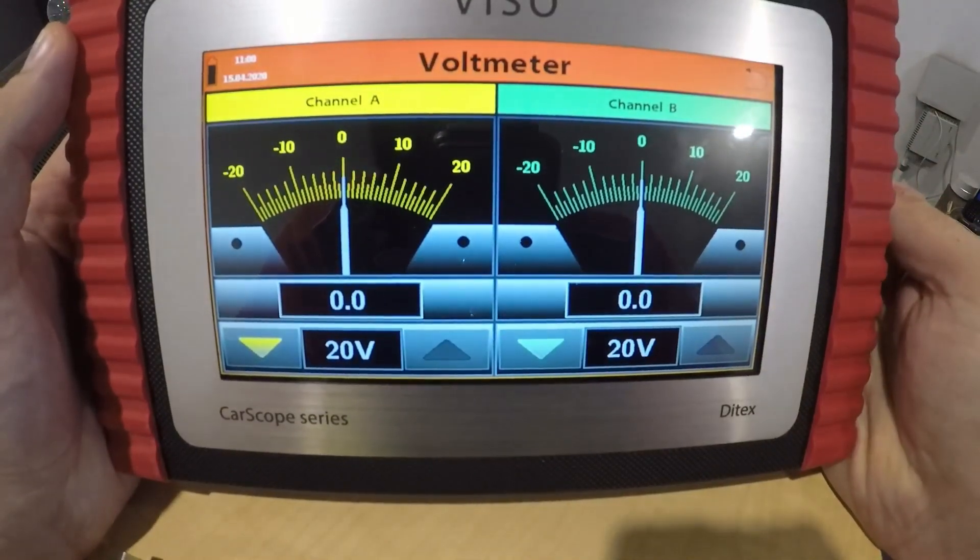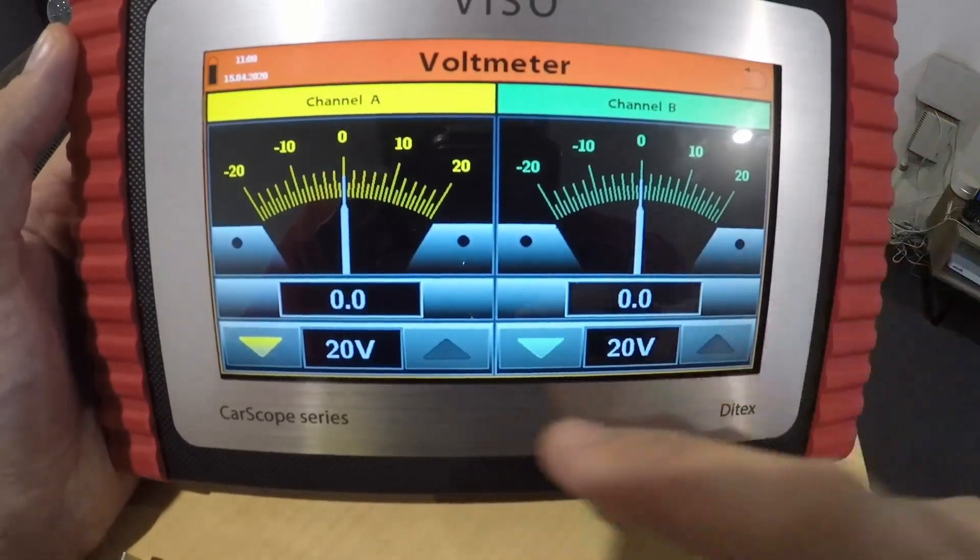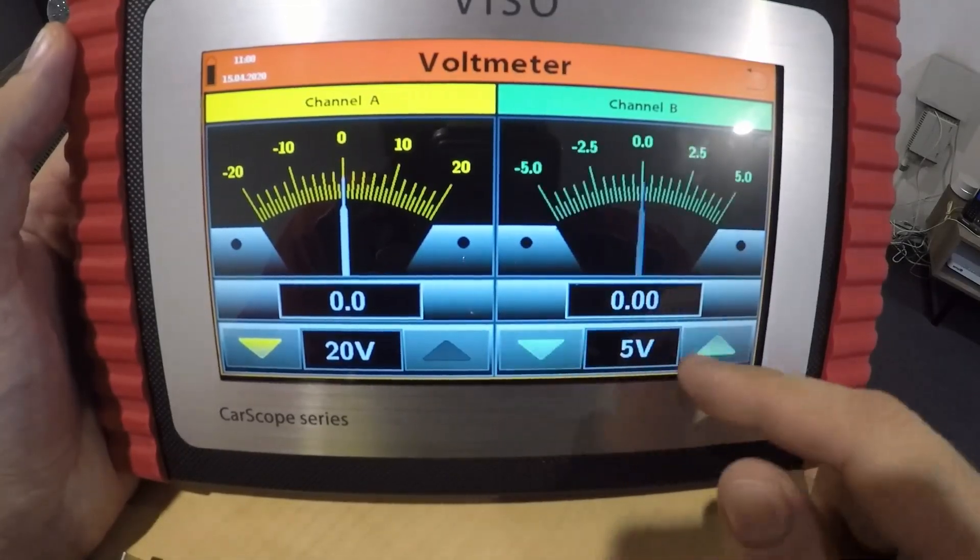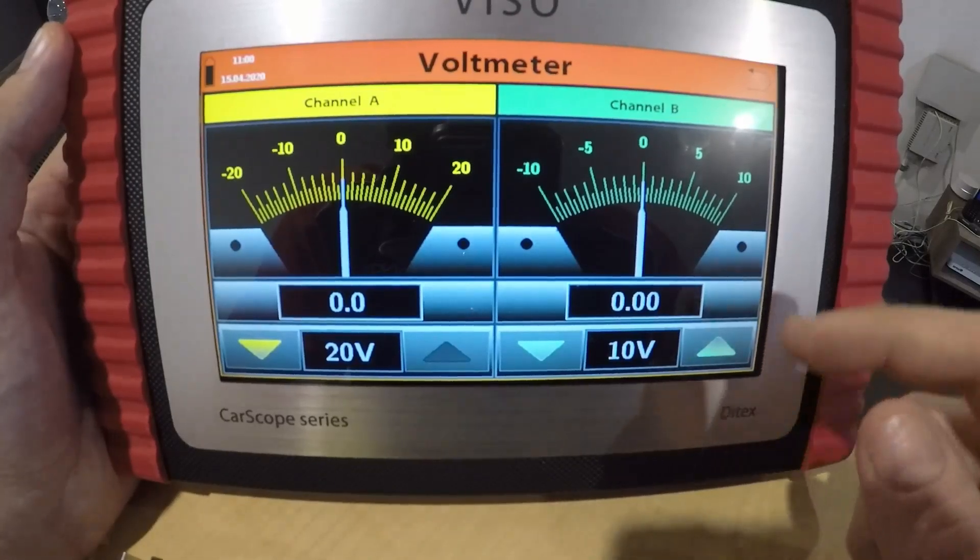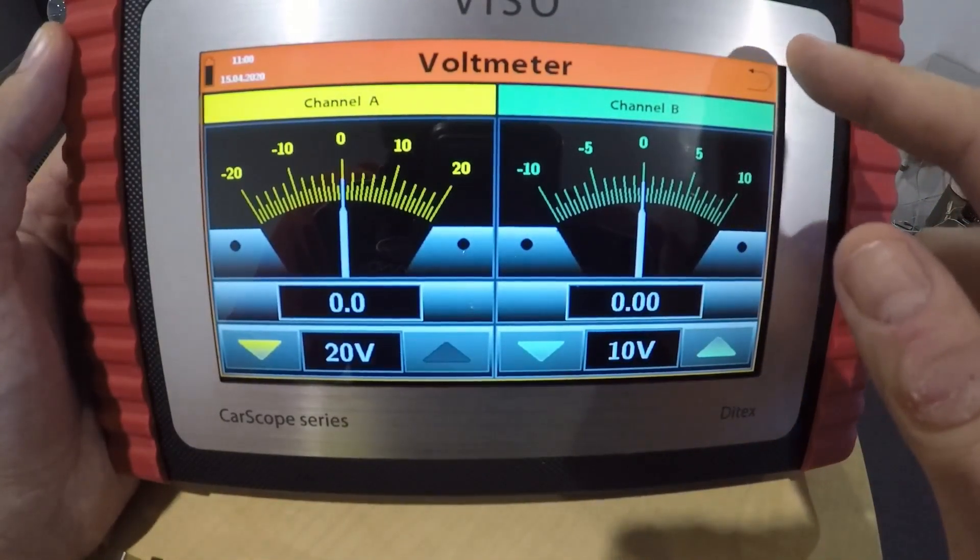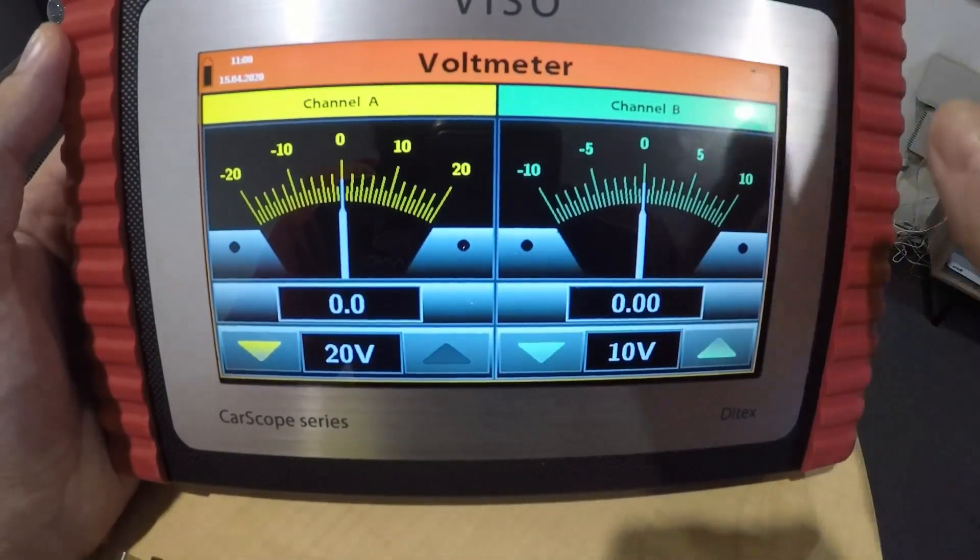Voltmeter, standard voltmeter two channels. You can see obviously you can set these to whatever you like and you can see two different voltages at the same time. Just a normal multimeter sort of thing. So not really a big deal, but still okay. Good to have I guess.